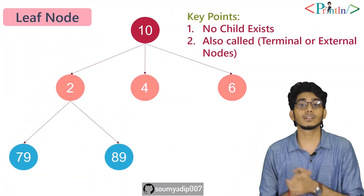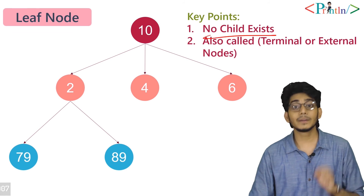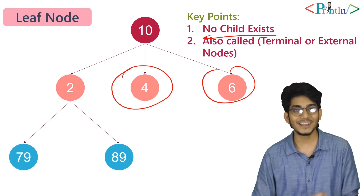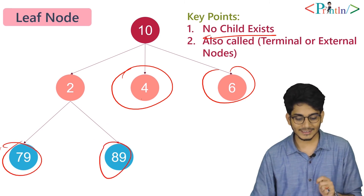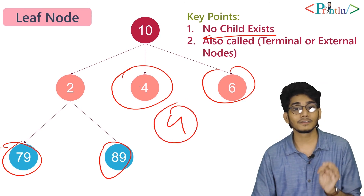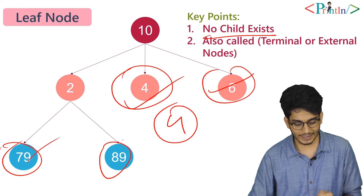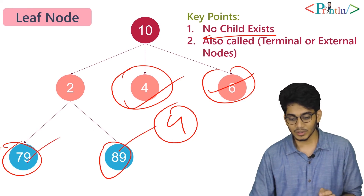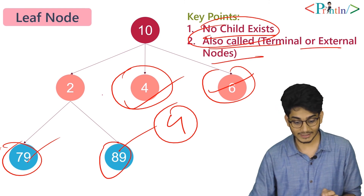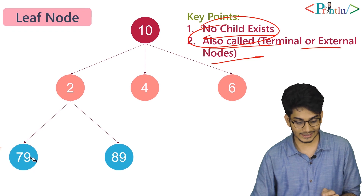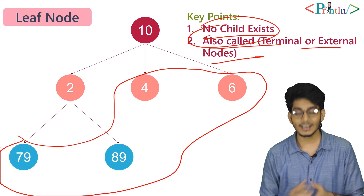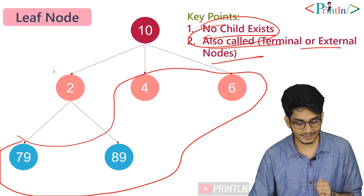Now we'll talk about leaf nodes. A leaf node has no children, meaning its degree is 0. In this tree we have 4 leaf nodes: 4, 6, 79, and 89 — all with degree 0. Leaf nodes are also called terminal or external nodes. Node 2 is the internal node, while 4 and 6 are examples of leaf nodes.